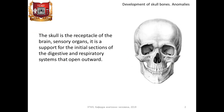The skull is the receptacle of the brain and sensory organs; it is the support for the initial sections of the digestive and respiratory system that open outwards. 23 bones form a human skull, 8 unpaired and 7 paired. The skull in all vertebrates is divided into two parts: the brain case (cerebral cranium) and visceral cranium.